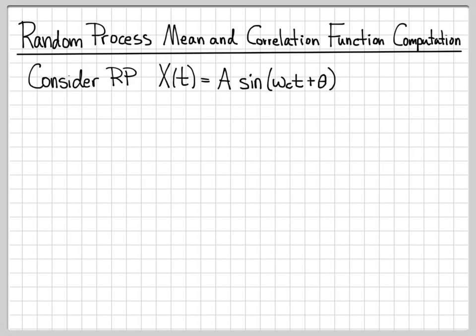So our random process is x of t, so the same notation we typically use capital X to indicate a random quantity, but now we're talking about a random process, so it's of the continuous variable t, and it is equal to A sine of omega ct plus theta. So the random quantities here are the amplitude, so this is a random variable. It has some mean and it has some variance.